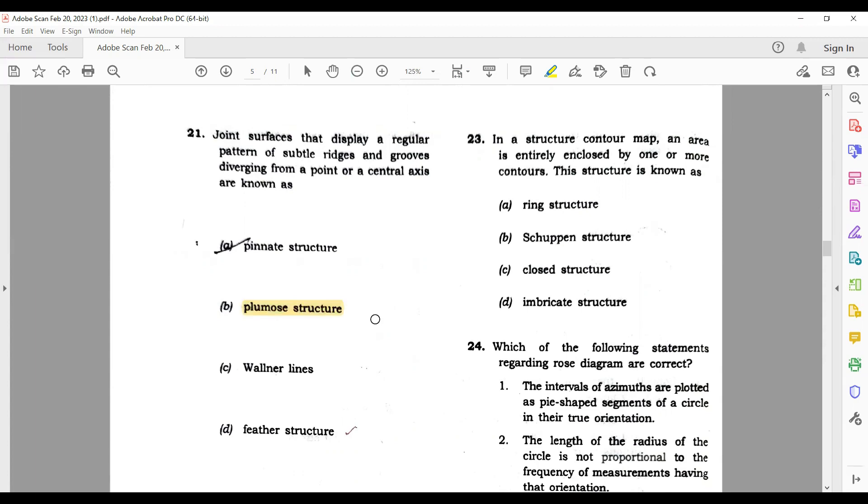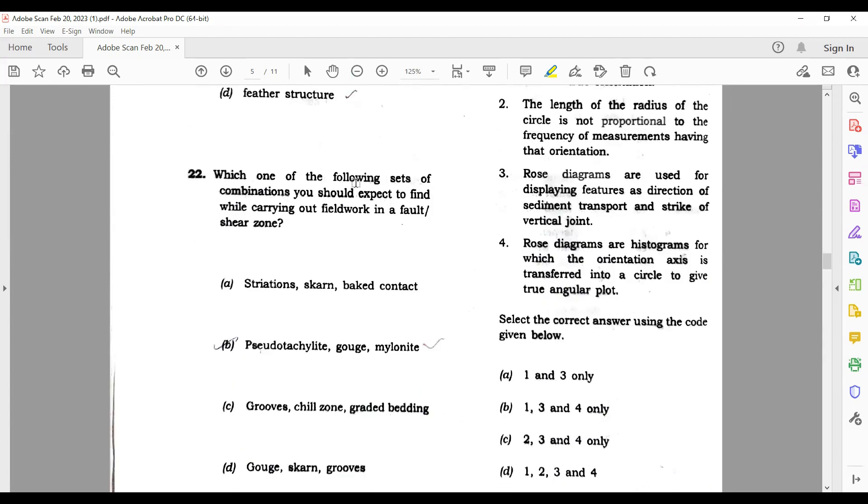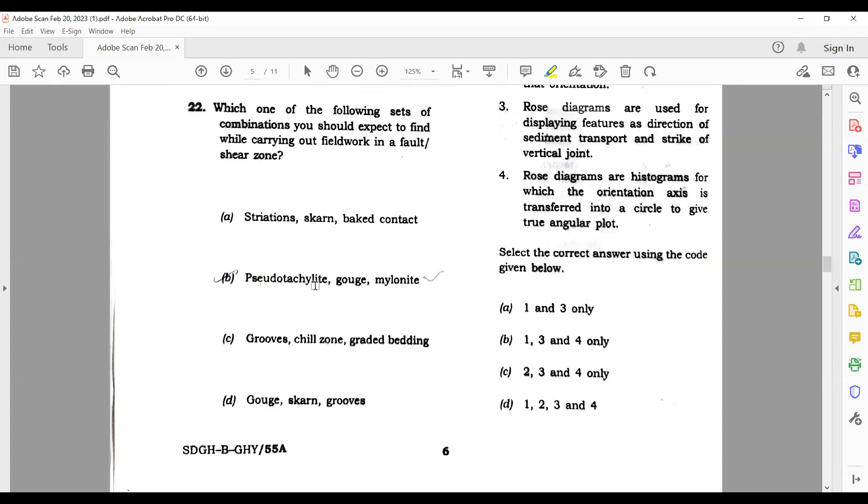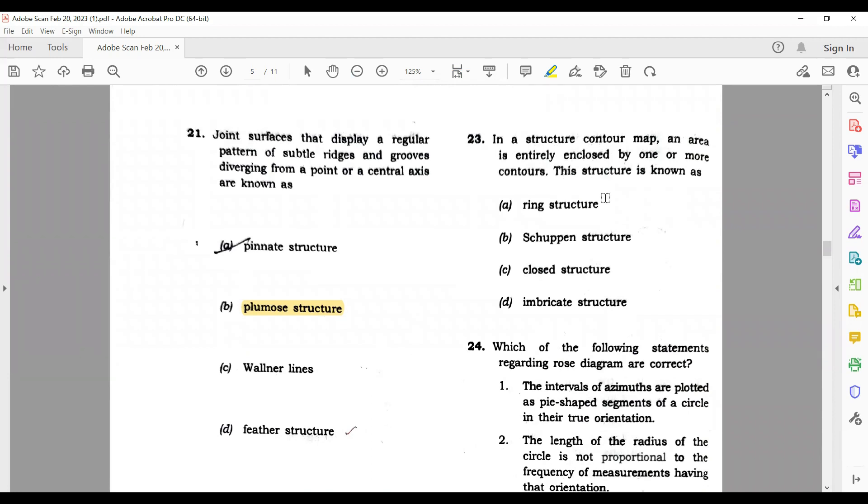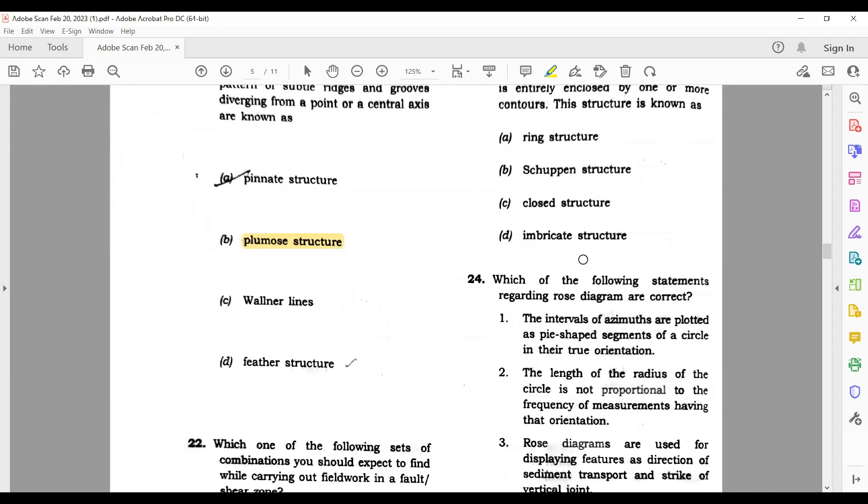Joint surfaces that display a regular pattern of subtle ridges and grooves diverging from a point or central axis are known as plumose structure. Which one of the following sets combination you should expect to find while carrying out fieldwork in a fault? D is your correct option. In a structure contour map, an area is enclosed by one or more contours. This question I am not sure. I am confused between ring and closed structure. You guys can comment the answer.